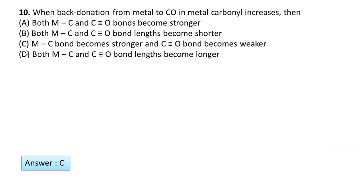Question number 10: When back-donation from metal to CO in M-CO bond increases, what happens? The correct option is C: M-C bond becomes stronger and C≡O bond becomes weaker. We will see how this is.